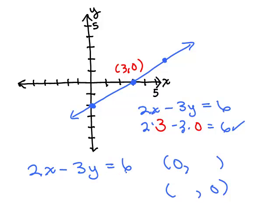When you put in 0 for x, you would get negative 3y equals 6, so y would have to be negative 2. When you put in 0 for x, did I do that correct? Yes.